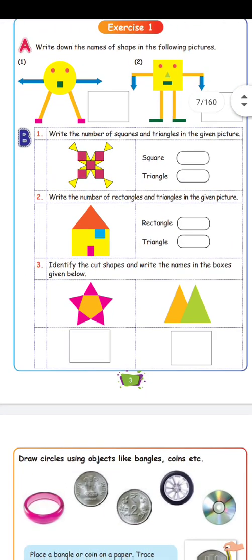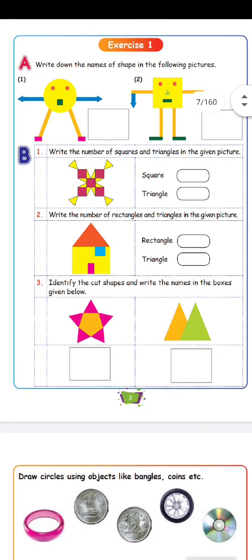In the first exercise, write down the name of the shape in the following picture. The main picture is in the center part. It is round, that's why we are going to call it a circle.